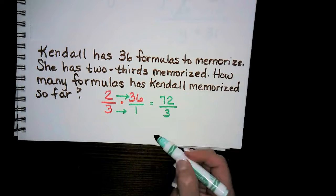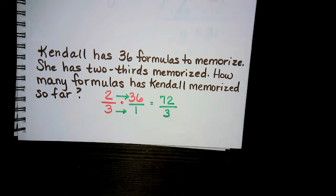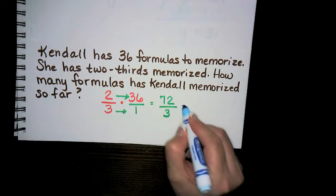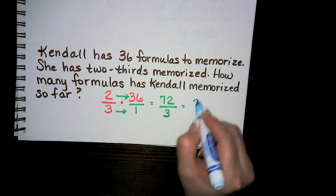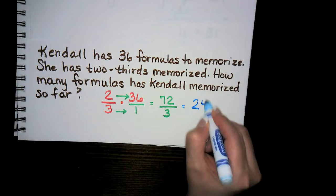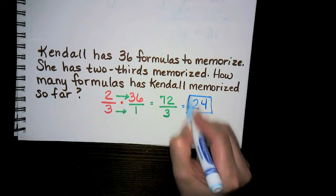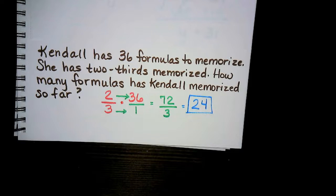Now you can do your division: 72 divided by three — feel free to use your calculator on that one — and it's going to give you 24. So Kindle has already memorized 24 of the formulas.